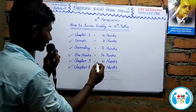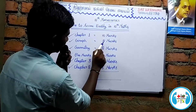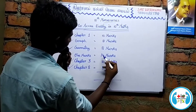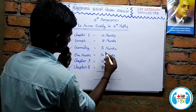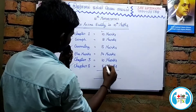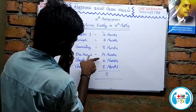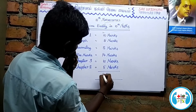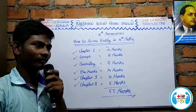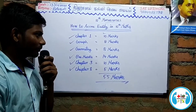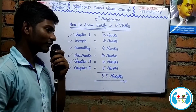This is the first lesson. The mark breakdown is: 8, 8, 16, 20, 25, 25 — chapters 2, 3, 4, 5. That comes to 55 marks. We can cover all these marks. This is 55 marks.